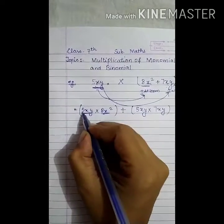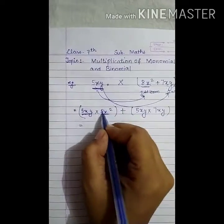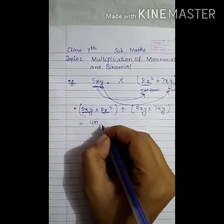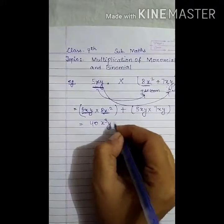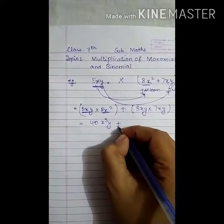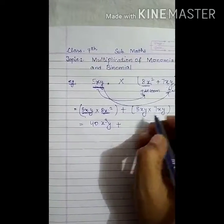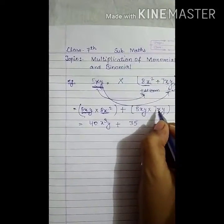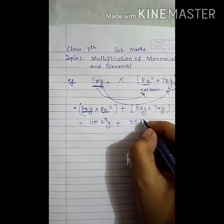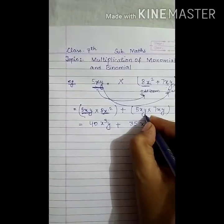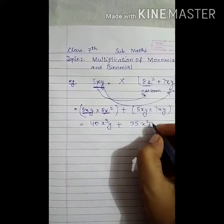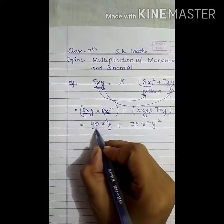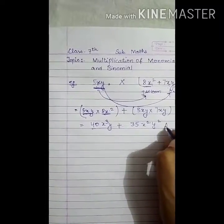So it is equal to 40x cubed y plus 35x squared y squared. X multiplied by x is x square, and y multiplied by y is y squared. So this is the required answer.